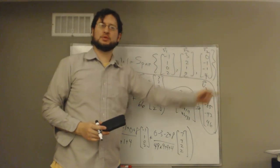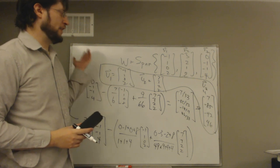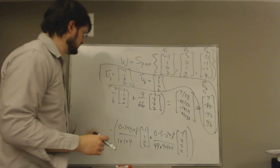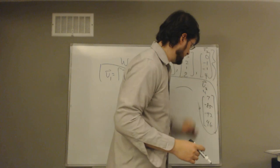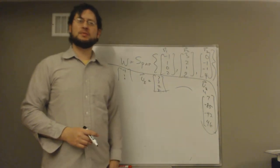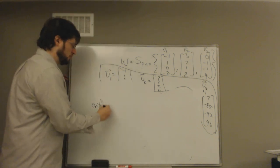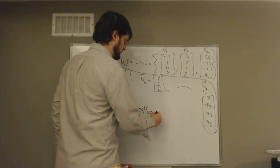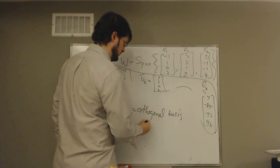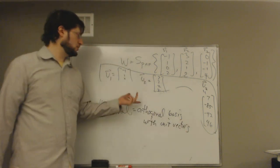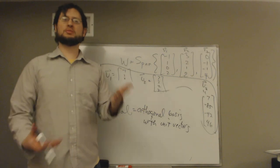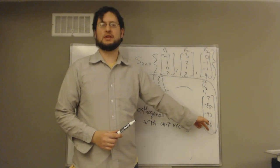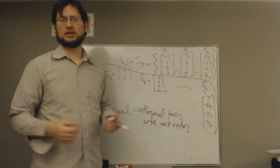One last thing: the problem may ask for an orthonormal basis rather than just an orthogonal one. Orthonormal means an orthogonal basis with unit vectors. We can simply divide each of these vectors by its length to normalize them. It will look messy — we get square roots with large numbers — but that's okay.